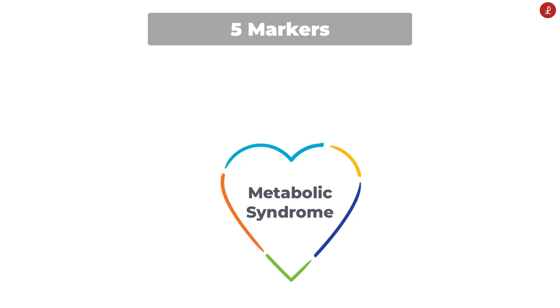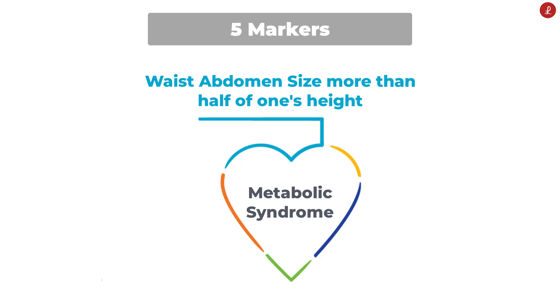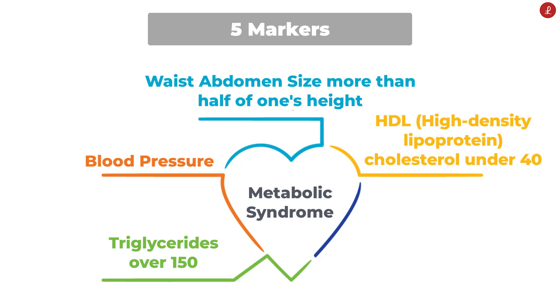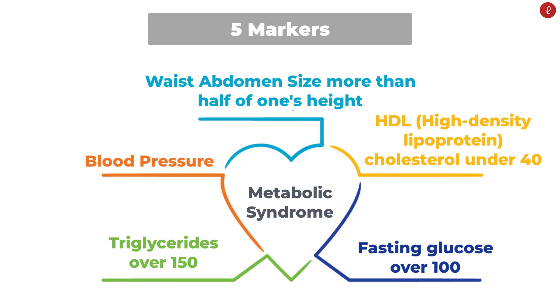Metabolic syndrome is a condition that represents one's state of health based on five markers. Number one: waist or abdomen size greater than half of one's height. Number two: blood pressure over 130/85. Number three: triglycerides over 150. Number four: HDL cholesterol under 40. Number five: fasting glucose over 100. When one has three of the above five conditions, he is referred to as having metabolic syndrome. When one does not have any of these conditions, he is generally in good health.